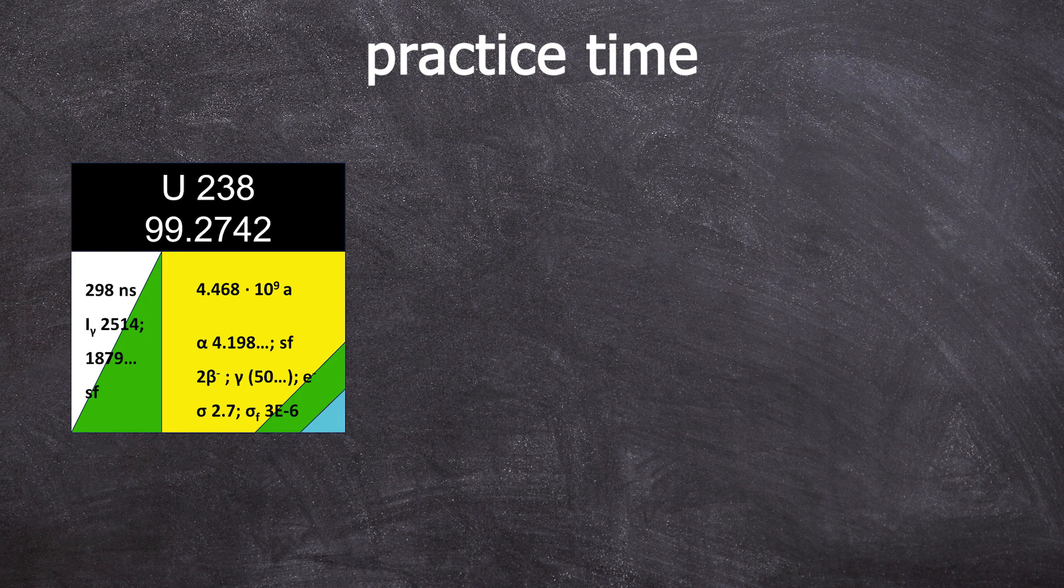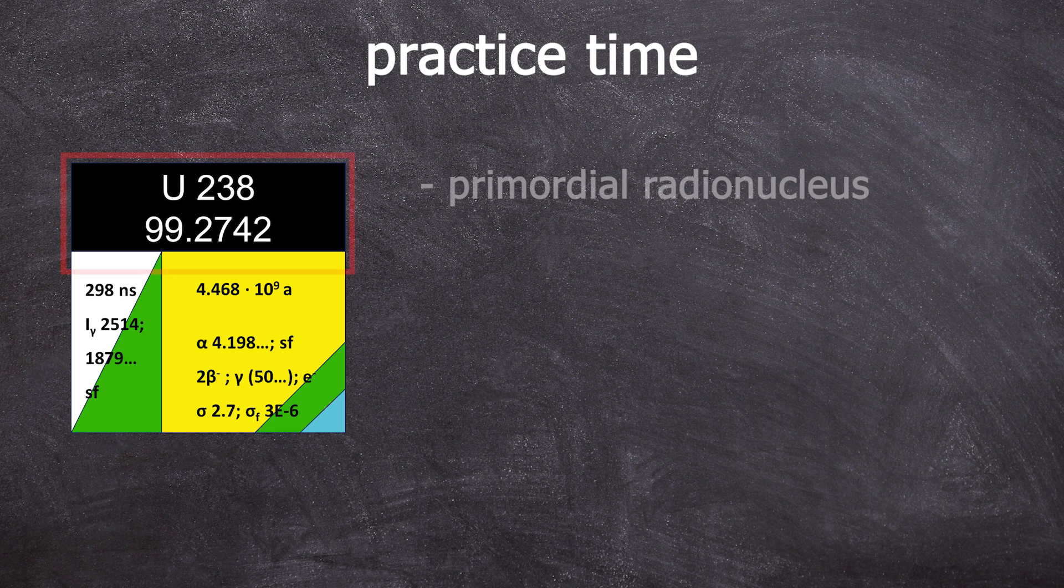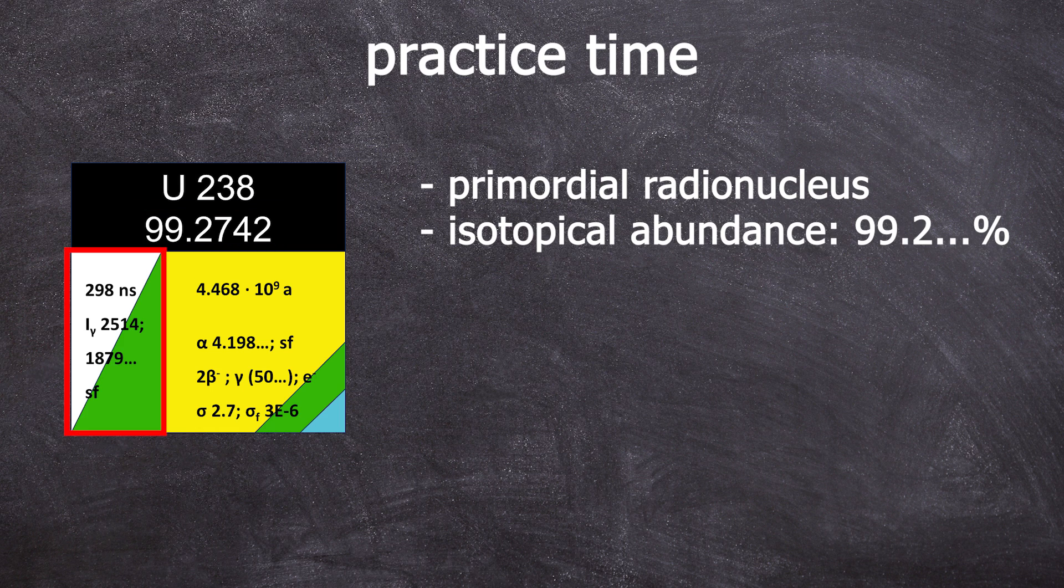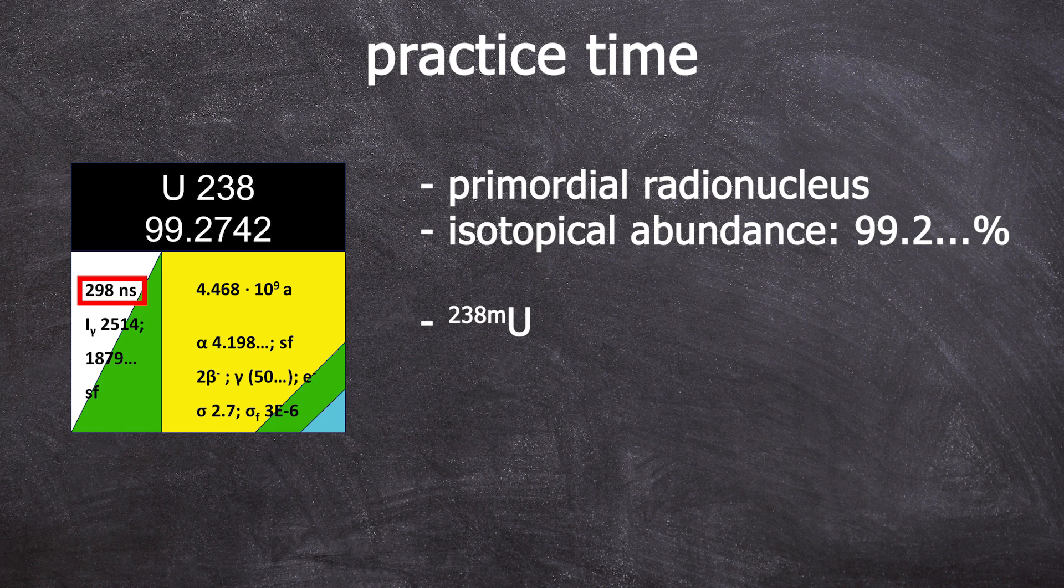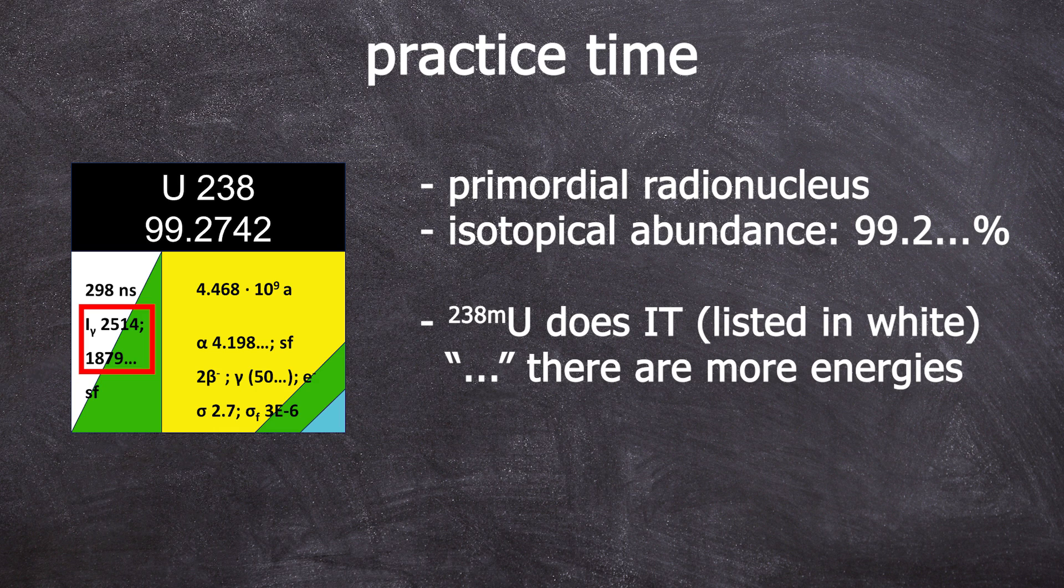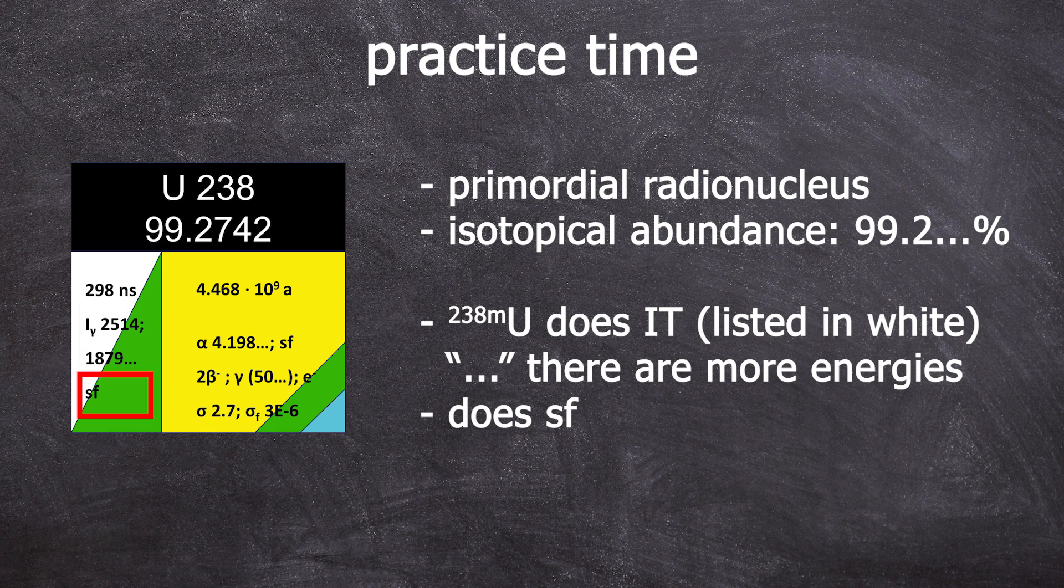Let's start with uranium-238. Pause the video and see how much you can deduce without my help. Uranium-238 is a primordial radionucleus with the 238 isotope making up 99.2742% of all uranium atoms occurring on Earth. There is an excited state, uranium-238m, which has a half-life of 298 nanoseconds and can decay to the ground state via isomeric transition, emitting a gamma ray with the energy of 2,514 or 1,879 kiloelectron volts. But those aren't the only gamma energies, there are also other ones with a probability of less than 1%. The probability of isomeric transition ranges from 50 to 95%. The other decay mode of uranium-238m is spontaneous fission with a probability of occurrence ranging from 5 to 50%. For example, I know that this was corrected to be below 5% in the 2016 and 2018 version.